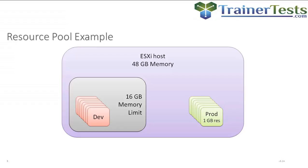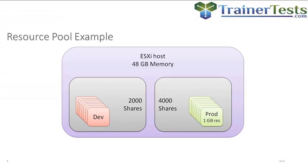So let's take a look at the share structure and how it can control contention for resources. Here we've created resource pools for the dev VMs and for the production virtual machines. The dev VM resource pool has 2000 shares, whereas the production resource pool has 4000. So the production resource pool is entitled to double the memory of the dev resource pool. Given that the ESXi host has 48 gigabytes of memory, the dev pool is essentially entitled to 16 gigs of memory, whereas the production pool is entitled to 32 gigs of memory.